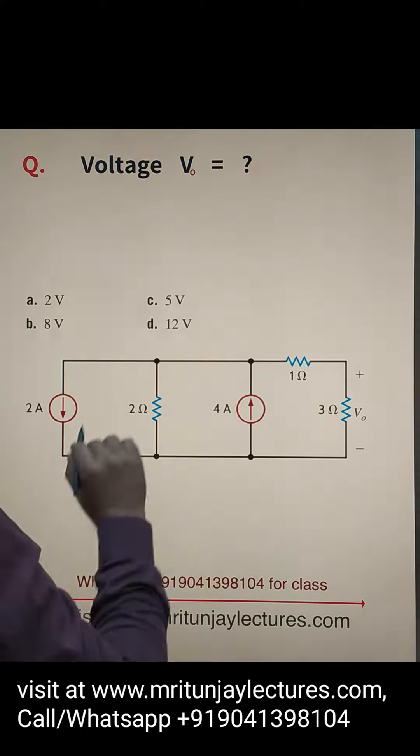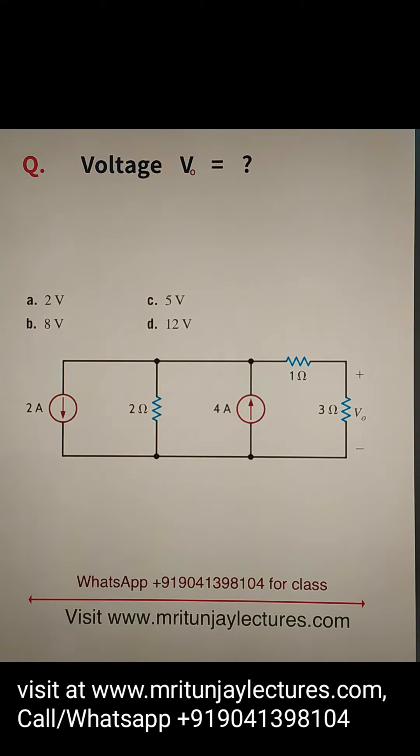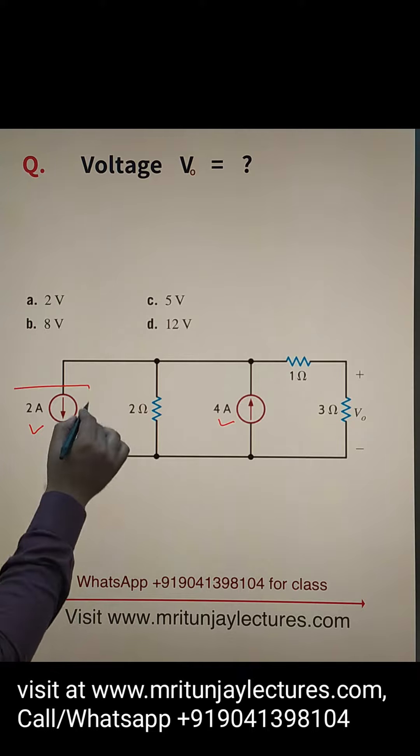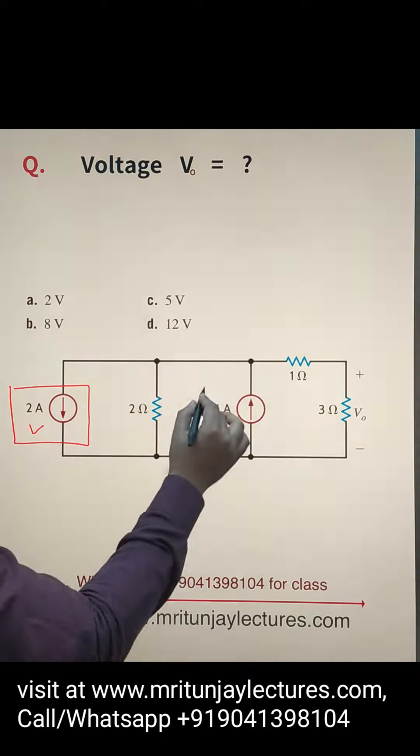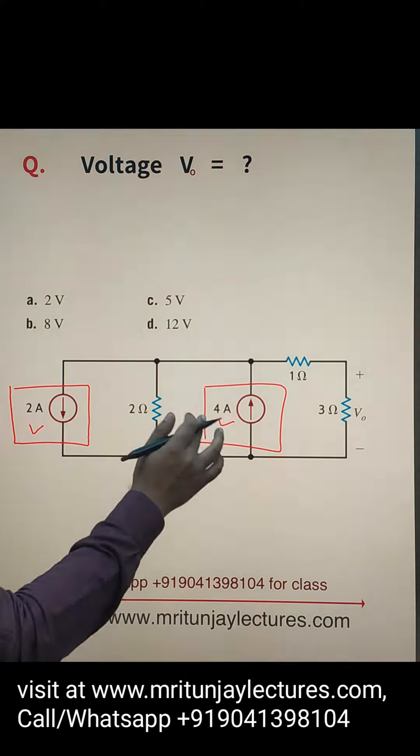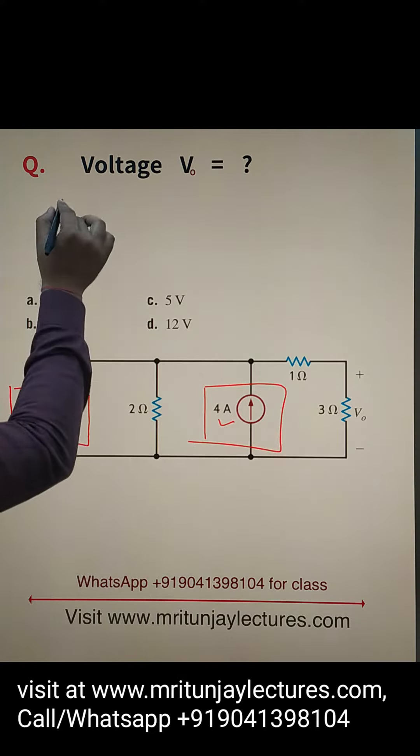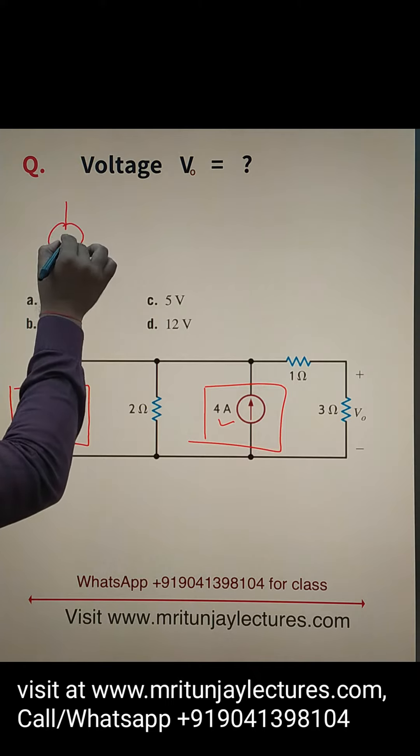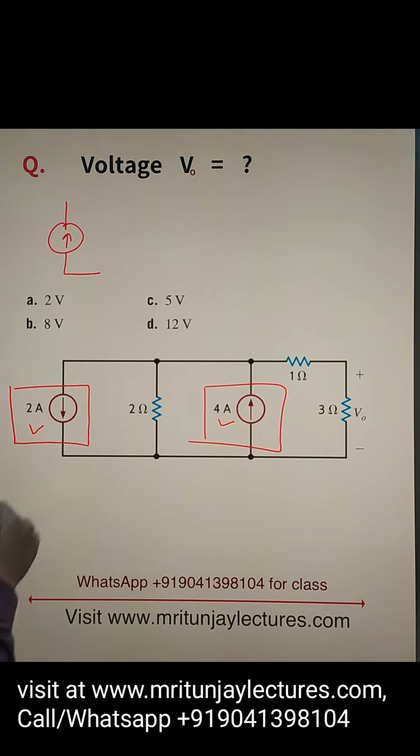Now, question of the day: how do we determine V₀? If you see very carefully, there is 4 ampere and 2 ampere. Both are parallel, so the net current - one direction is downward and the other is upward. Net current direction: 4 ampere minus 2, that is 2 ampere in upward direction. Basically, apply KCL here.